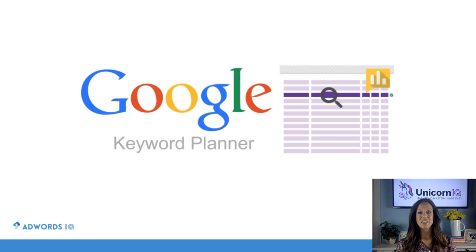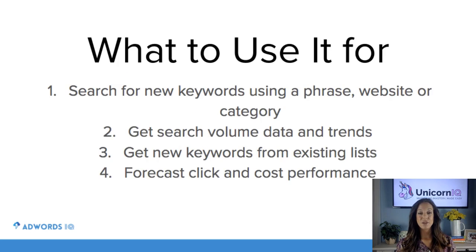First of all, here's what we use Google Keyword Planner for. Number one, we use it to search for new keyword ideas. We're not just geniuses who dream up all these amazing keywords in the very first phase. We actually go to Google Keyword Planner and a few other places as well for ideas. We type in different websites and phrases to help brainstorm all the different possible keywords that we could potentially target.